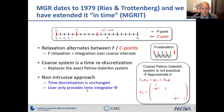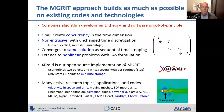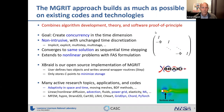One reason we use multigrid reduction in time is the non-intrusive property: you only really need to know how to apply phi, meaning you only need to know how to do a time step. So if you have existing code, you can wrap it and have a pretty non-intrusive method. We've been working on this for some years now with a multi-pronged approach involving algorithm development, theory, and software proof of principle by coupling to actual codes.